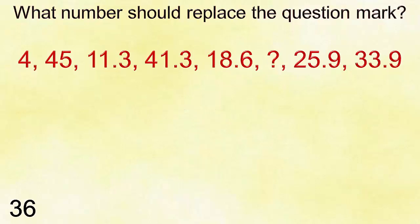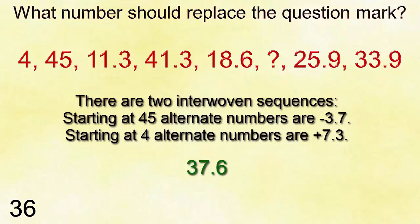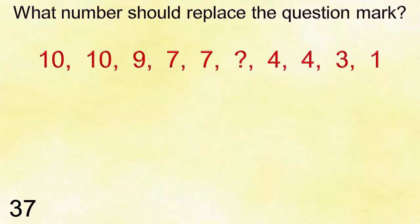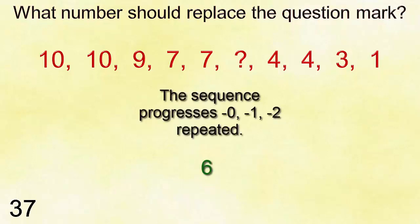Number thirty-five: one hundred eighty-seven point six, seventy-five point two, sixty-two point eight, fifty point four. Answer is thirty-eight. Number thirty-six: four, forty-five, eleven point three, forty-one point three, eighteen point six, question mark, twenty-five point nine, thirty-three point nine. Answer is thirty-seven point six.